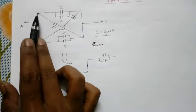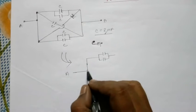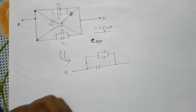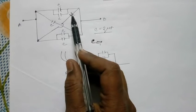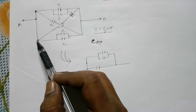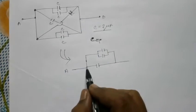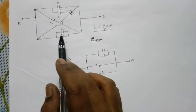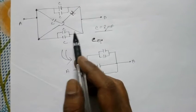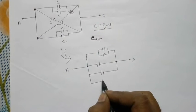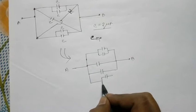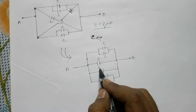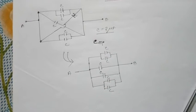You can see that one capacitor starts at A and ends at B, and another capacitor also starts at A and ends at B. So you can draw another capacitor that starts at A and ends at B. These two capacitors are connected in parallel and can be joined that way.